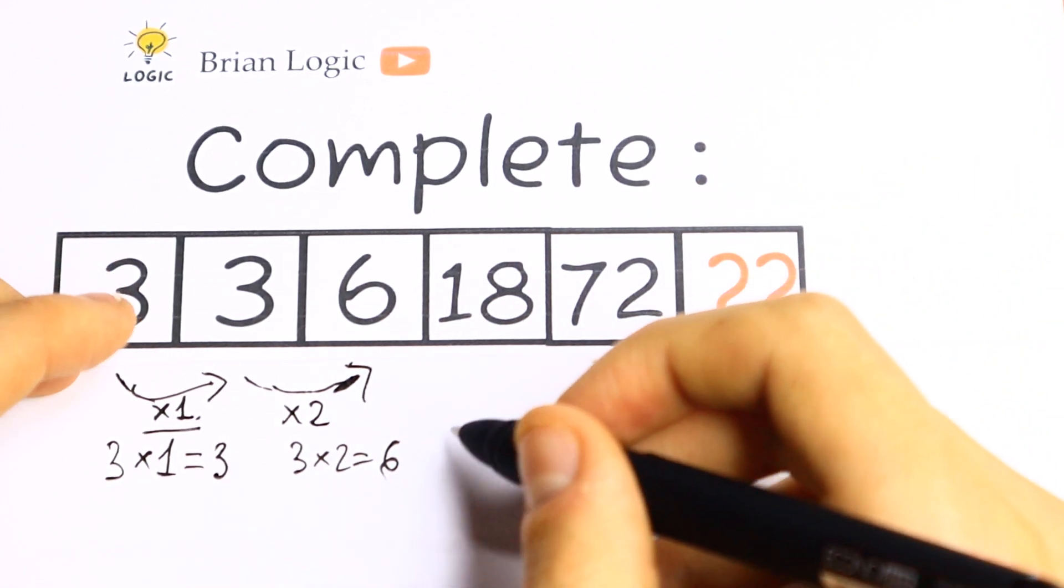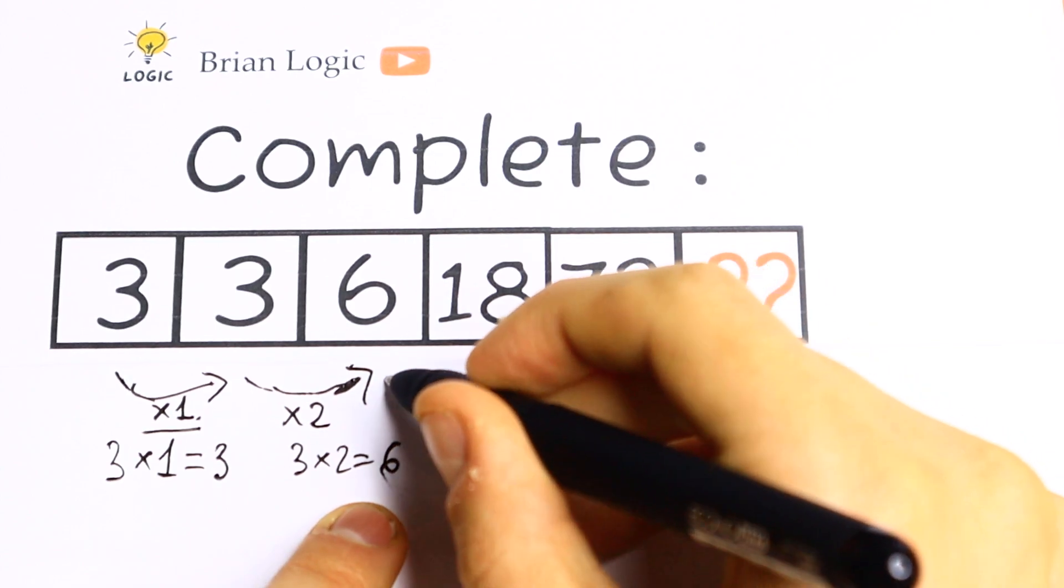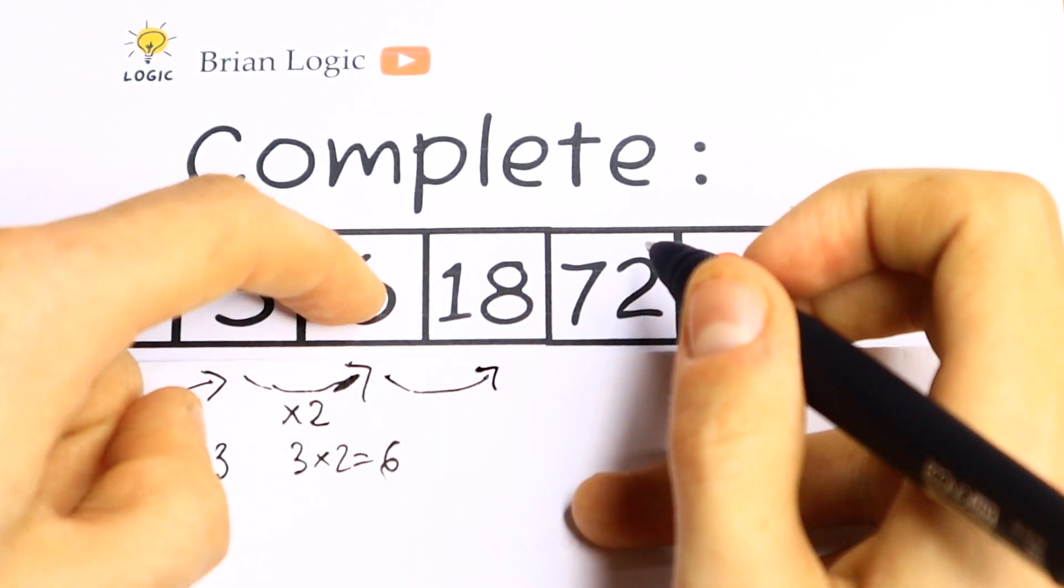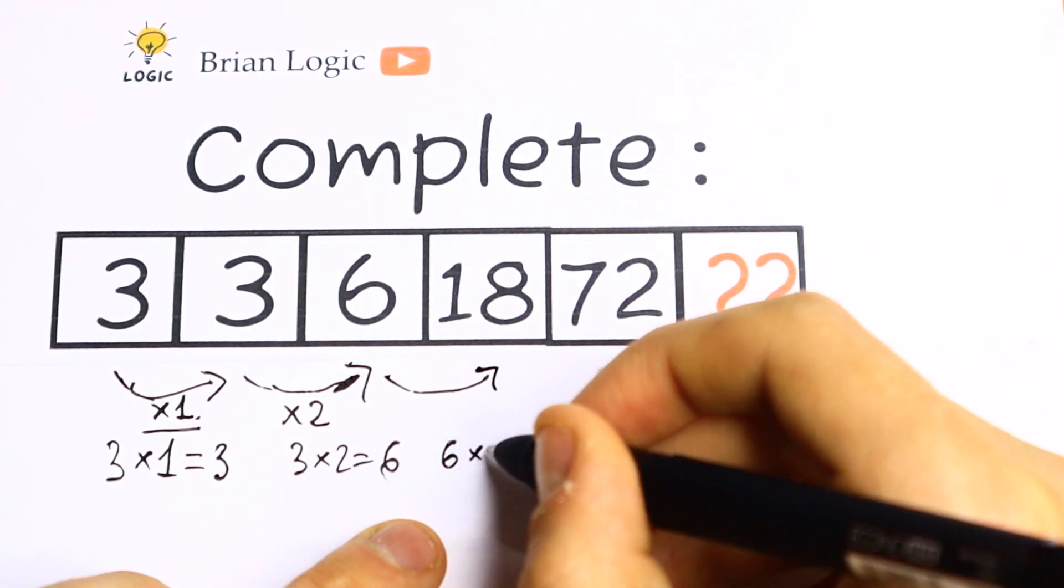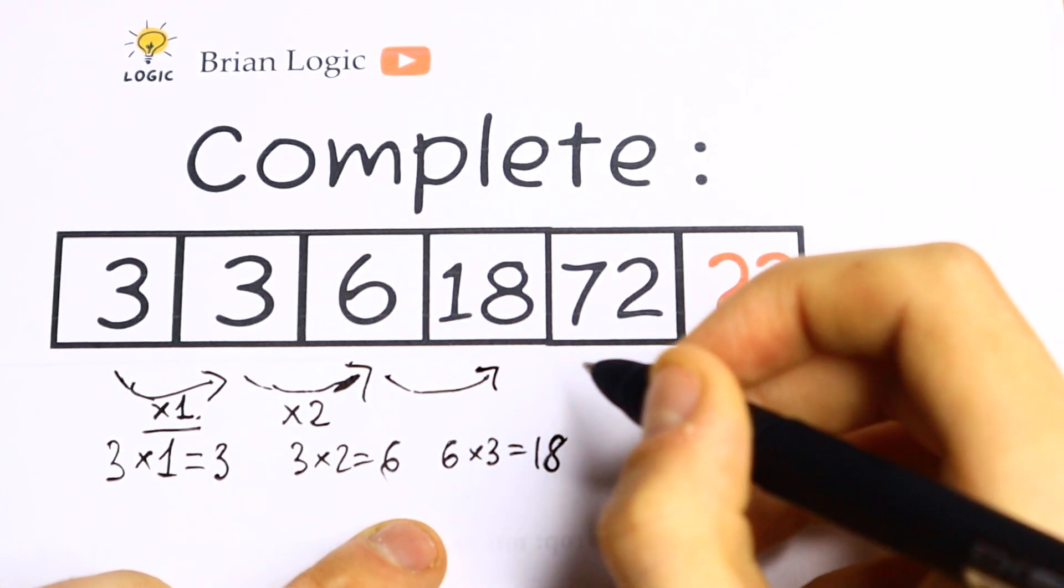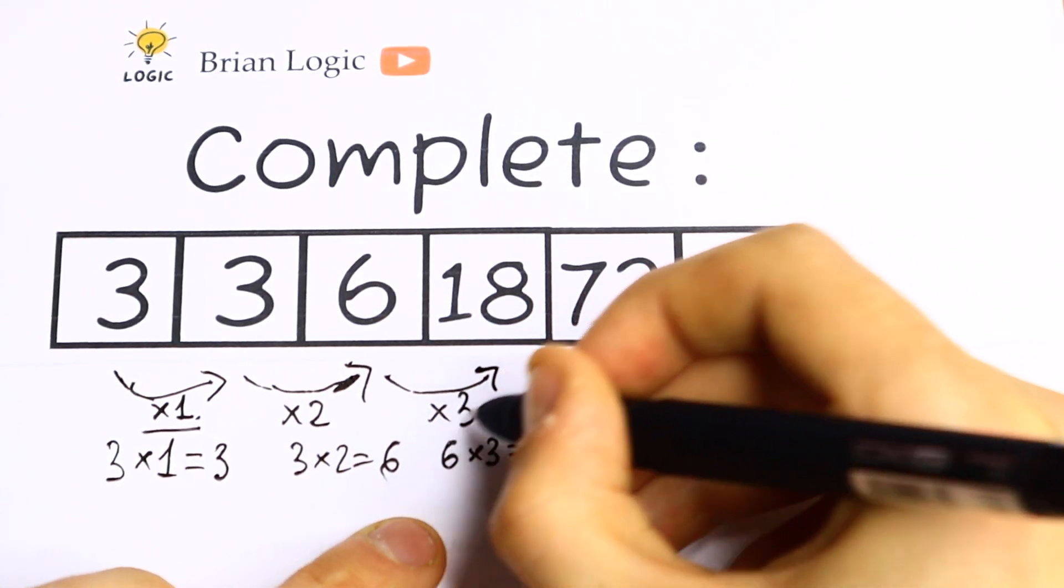Let's check this logic, check this order. We have 6 and we have 18. We need to multiply this 6 by 3 to get 18. So here we're multiplying by 3.